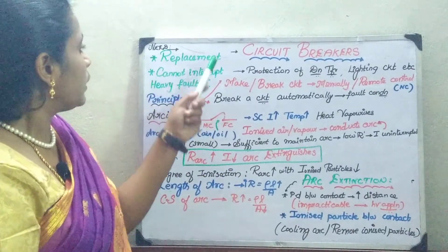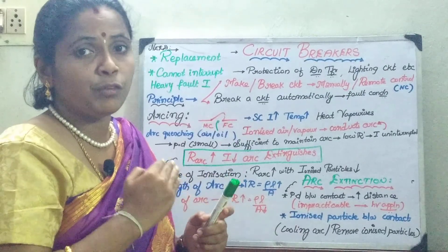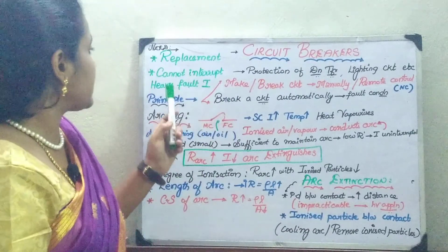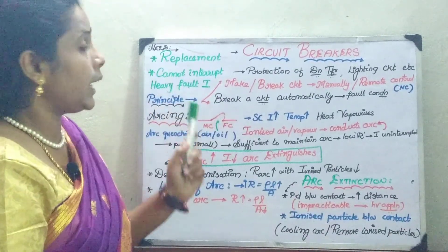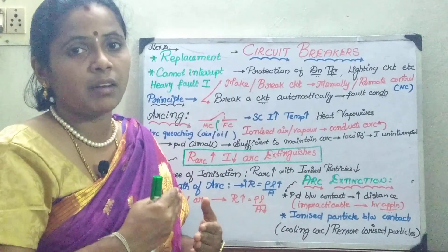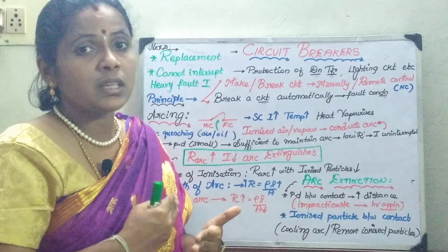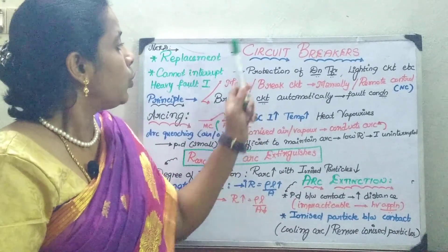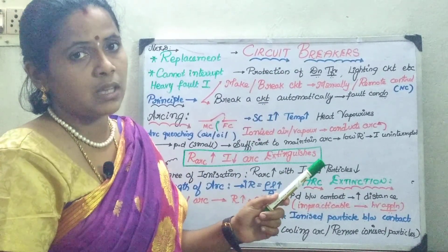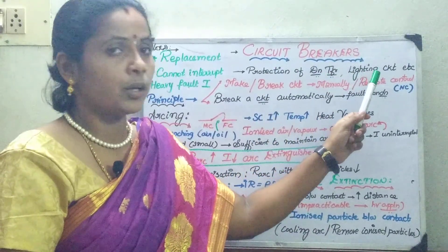As we know, the fuse requires replacement after every operation. Whenever a fuse blows out, it takes some time to rewire it. The next thing is, this fuse cannot interrupt the heavy fault currents. So these are the two drawbacks: one is the replacement problem, and another is it cannot interrupt the heavy fault current. This necessitates going in for a circuit breaker for protecting various power system components against damage, such as the protection of distribution transformers or lighting circuits.